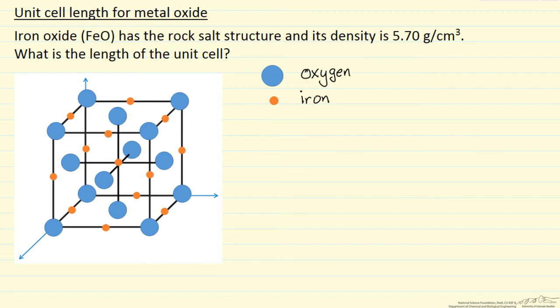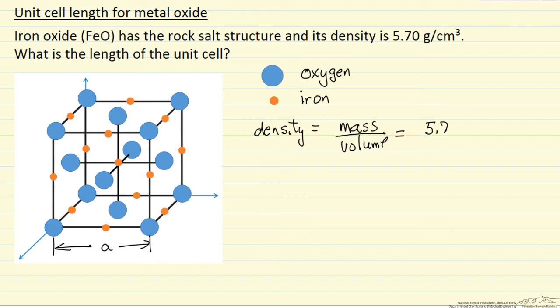The density is going to be the mass for this unit cell over the volume. What we're trying to determine is this distance that we're going to call A. And so the density we know is 5.70 grams per cubic centimeter.